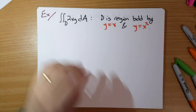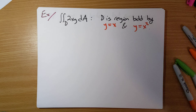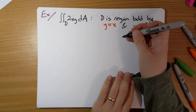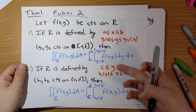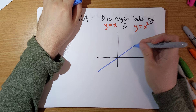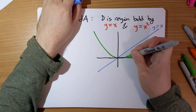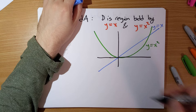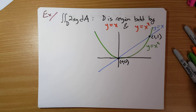Let's do an example: evaluate the integral of 2xy dA over region D, where D is the region bounded by y = x and y = x². Before doing anything else, we need to draw the picture. y = x is a straight line through the origin; y = x² is a parabola with vertex at the origin. They intersect at the origin (0,0) and at the point (1,1). Looking at this picture, this appears to be a vertically simple region.